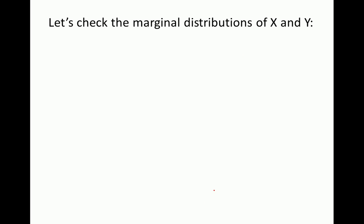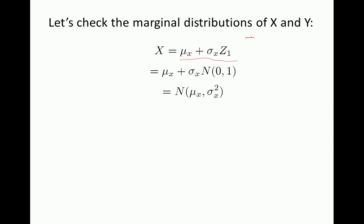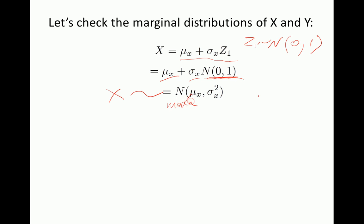Let's check the marginal distributions of x and y. x is just mu x plus sigma x times z1, where z1 is normally distributed with mean zero and variance one. Since mu x and sigma x are constants and z1 follows the normal distribution, x also follows a normal distribution — specifically, x is normally distributed with mean mu x and variance sigma squared x.